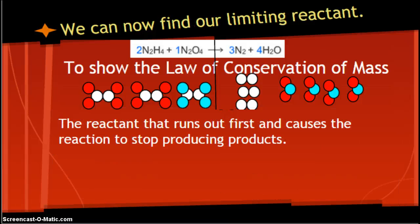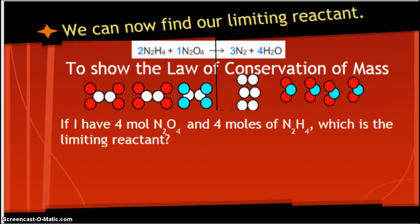Instead of doubling it, I multiplied it by 7.2. We can now find our limiting reactant. The reactant that runs out first and causes the reaction to stop producing products. This is like when I talked to you before, if you're making cars, if you have four car bodies and 100 tires, which one are you going to run out of first? Four car bodies that each need four wheels. So I need 16 wheels. If I have 100 wheels, I'm going to have lots of leftover wheels. It's the same idea. Which one's going to run out first? That one is my limiting reactant.